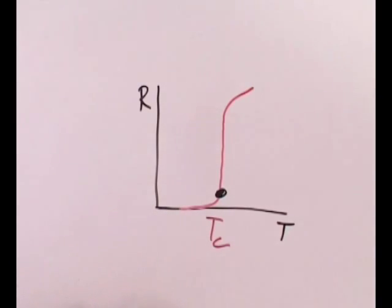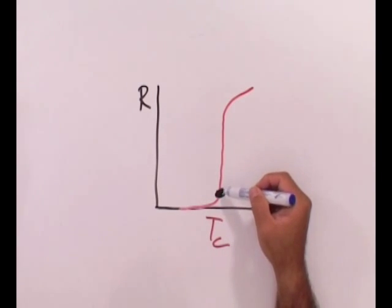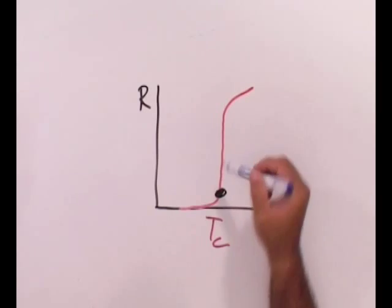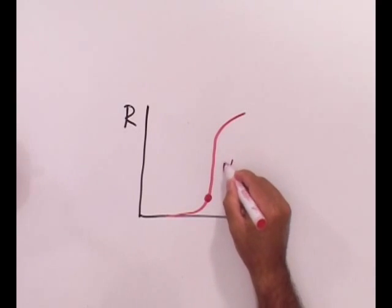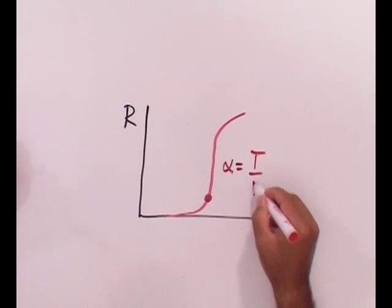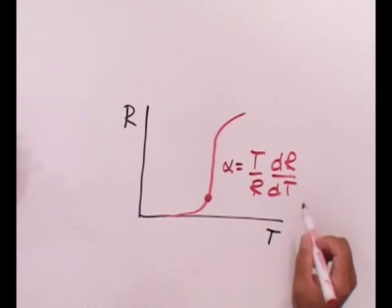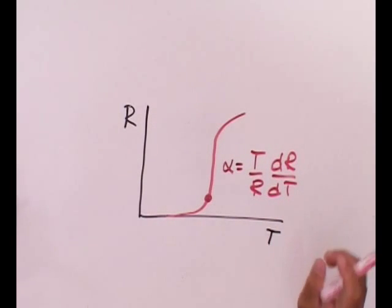What we need is a very sharp transition, in the sense that the thermometer will make a big jump for even a small change in temperature. The parameter of paramount importance is the one which gives you the variation of resistance with respect to temperature.